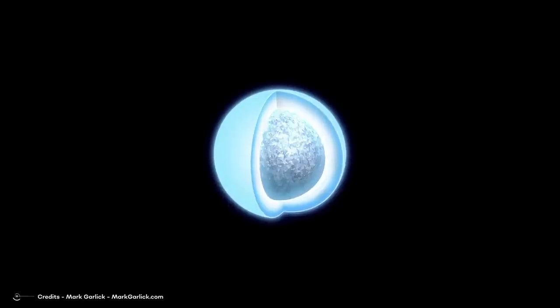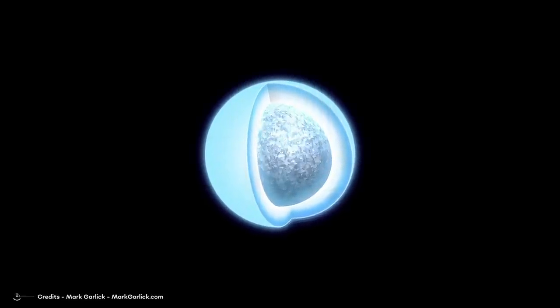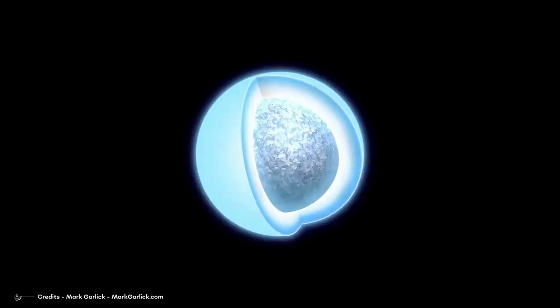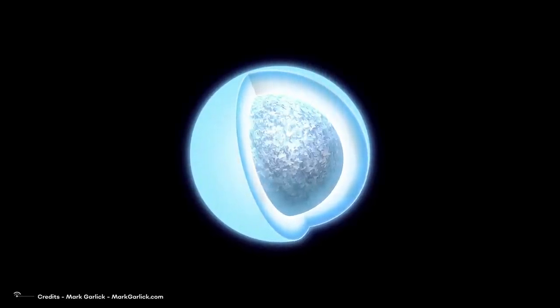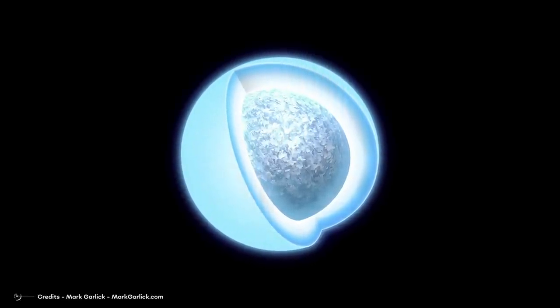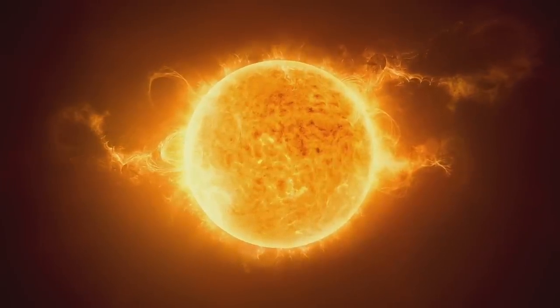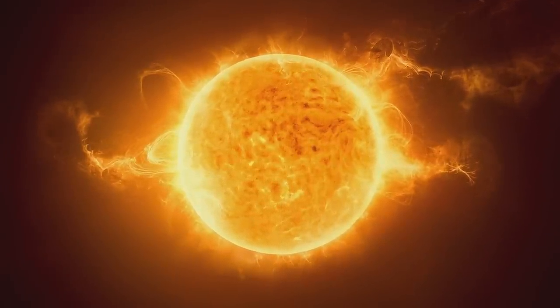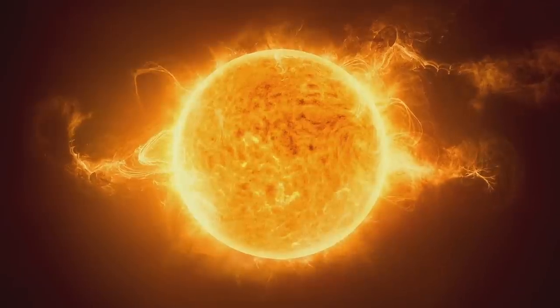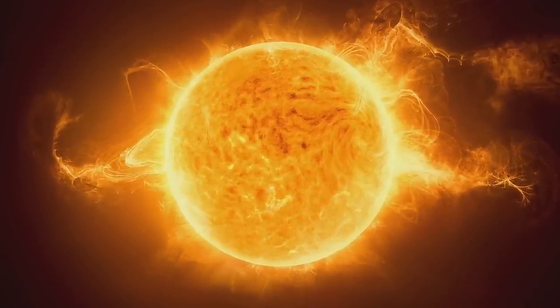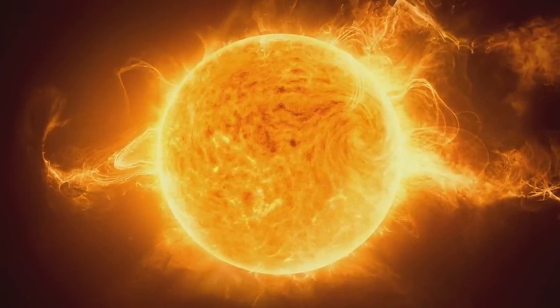What makes BPM 37093 so special is that it is believed to be made up largely of crystallized carbon, which means that it could be the largest diamond ever discovered. Scientists believe that BPM 37093 was once a star similar in size to our Sun. As the star reached the end of its life, it went through a process of expanding and contracting before eventually collapsing into a white dwarf. During this process, the carbon within the star became so compressed that it crystallized, creating a diamond-like structure that is estimated to be larger than the Earth.